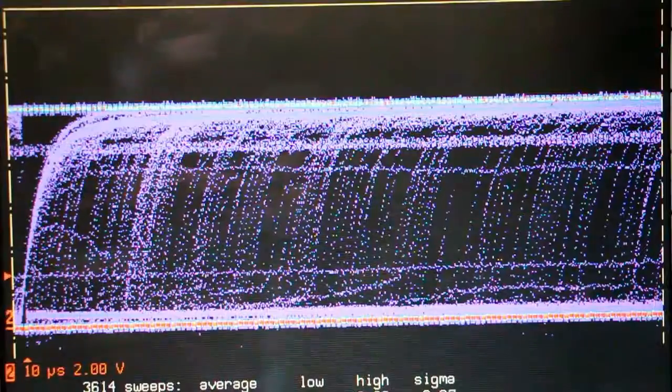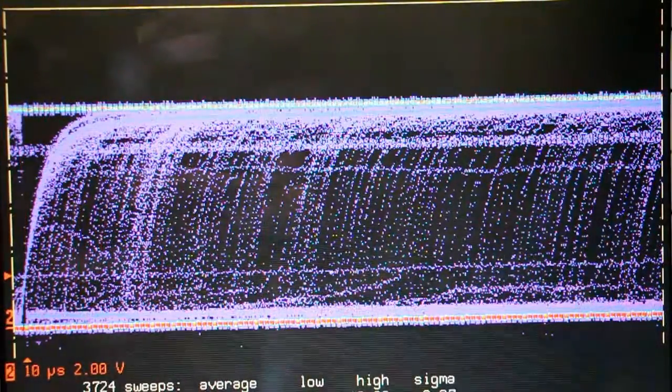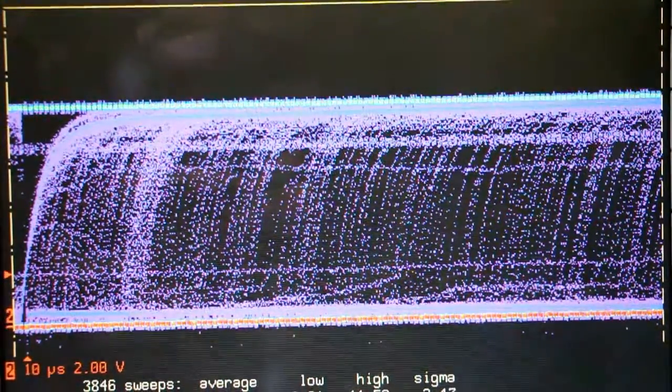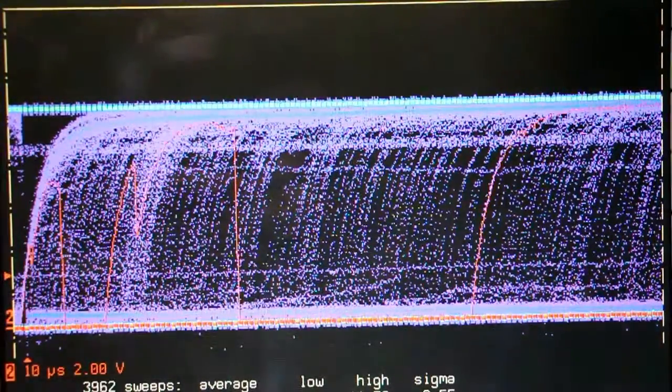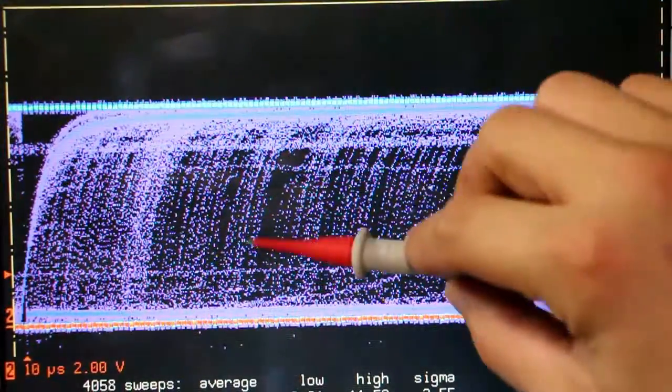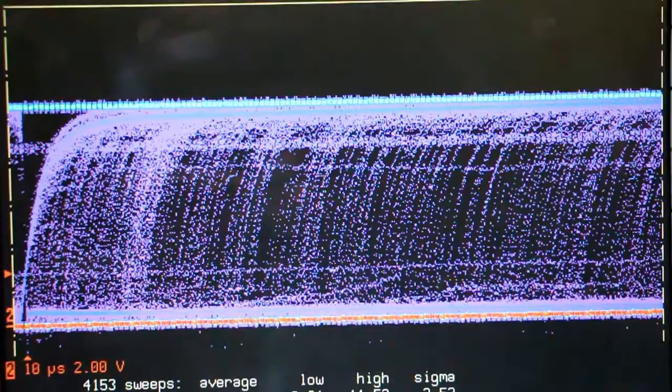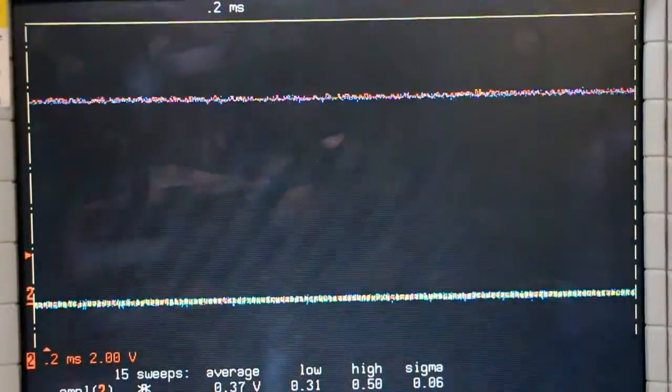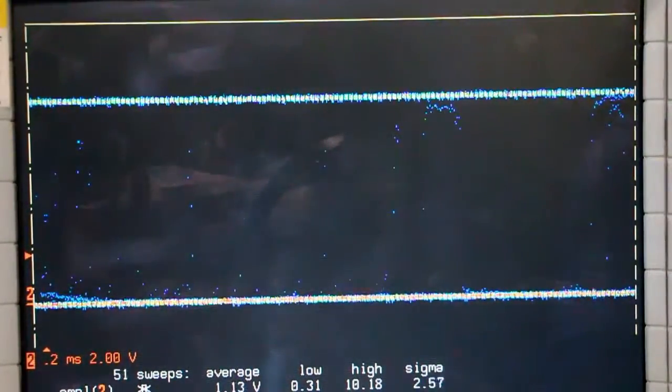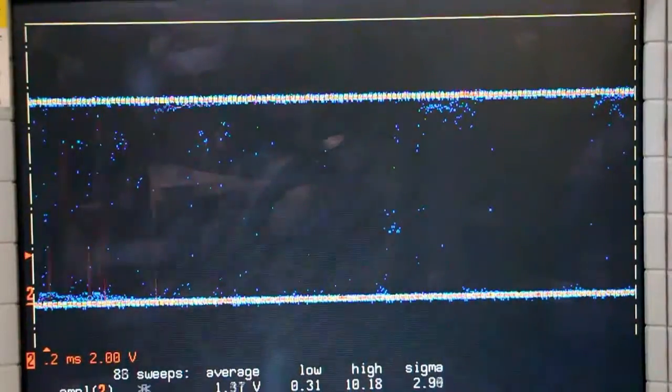Now, we're really looking in the microsecond level here. So if we take this, and we zoom it out to the millisecond level, like most of the processors are at least faster than that, you can see that the bouncing effect really only occurs when the switch is either flipped on or when it's flipped off.